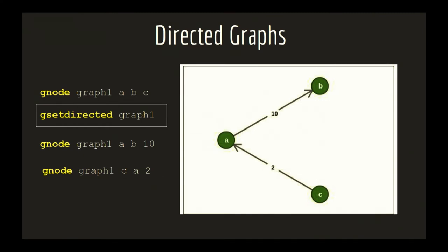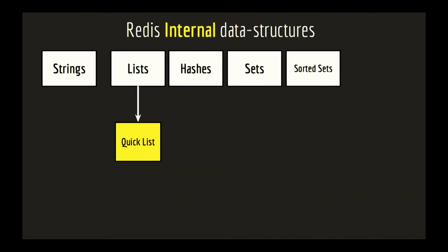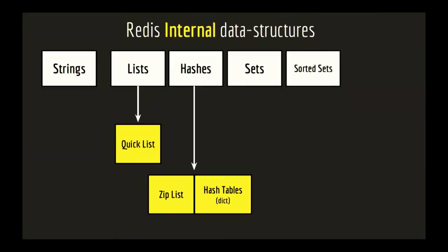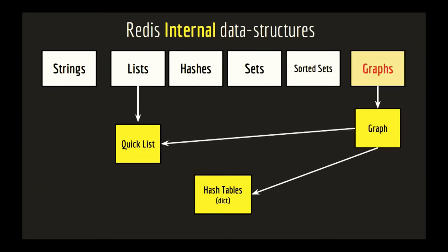So how is this working behind the scenes? Redis is hiding some internal data structures — for example, lists are implemented by quick lists, hashes are implemented by ziplists or hash tables, depending on the size of the hash. So what I did when I added graphs is I reused these internal data structures to avoid writing graphs from scratch.